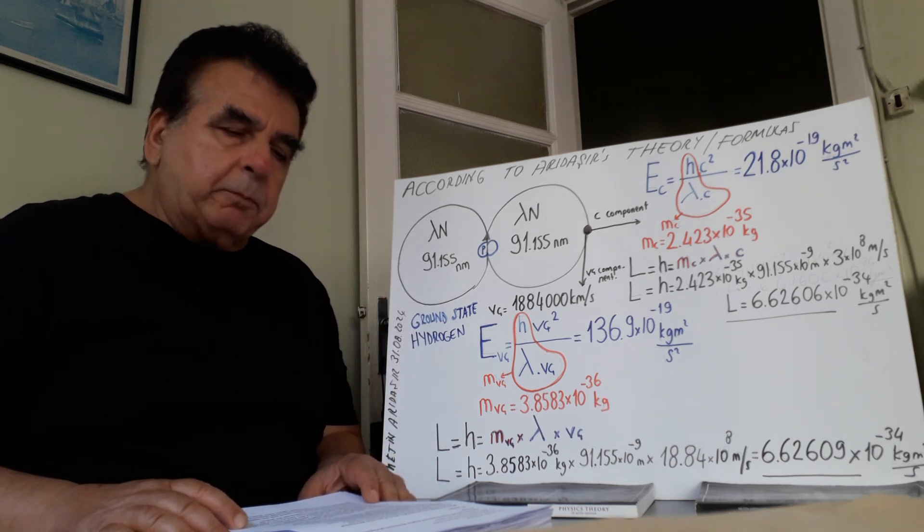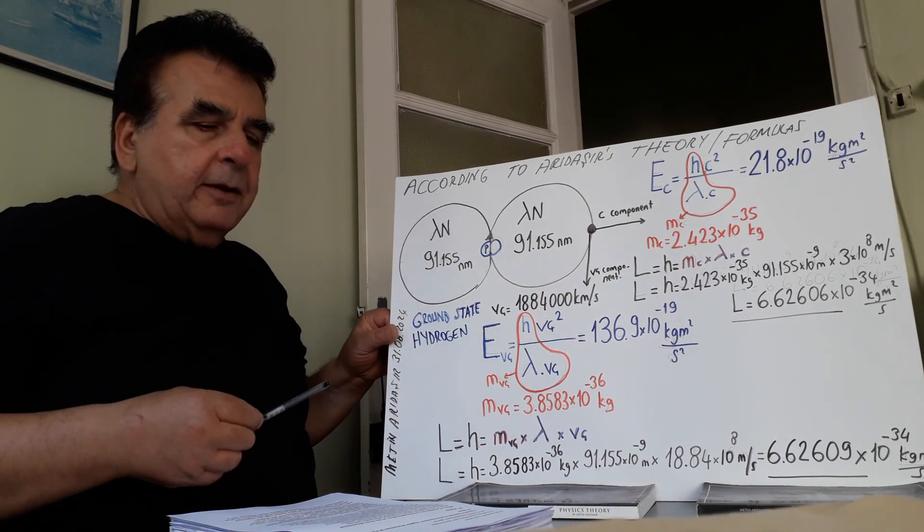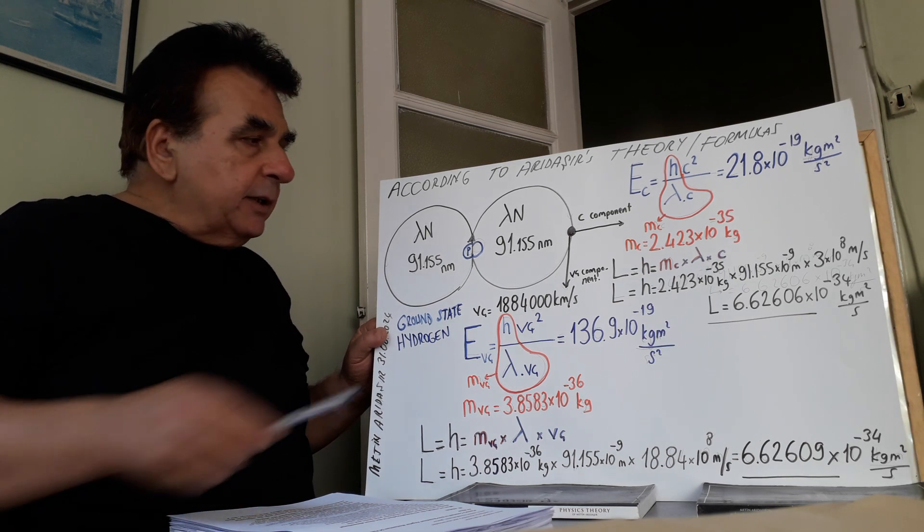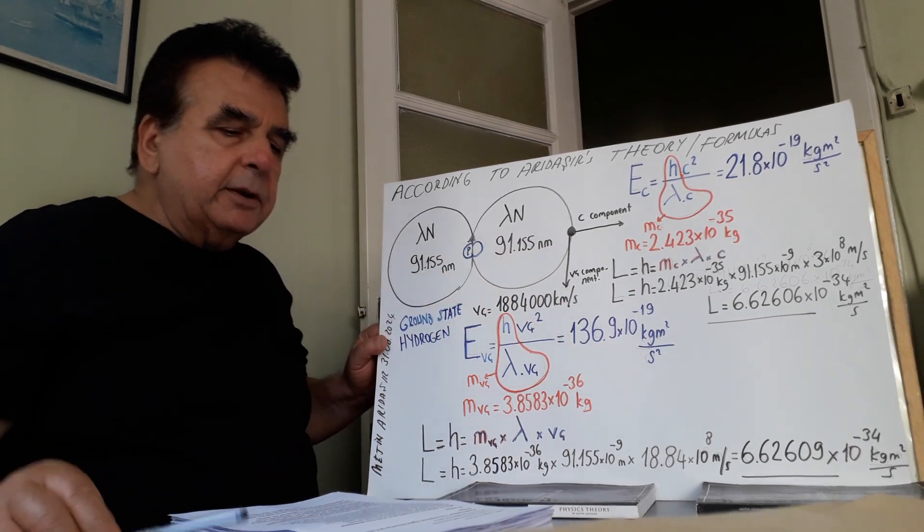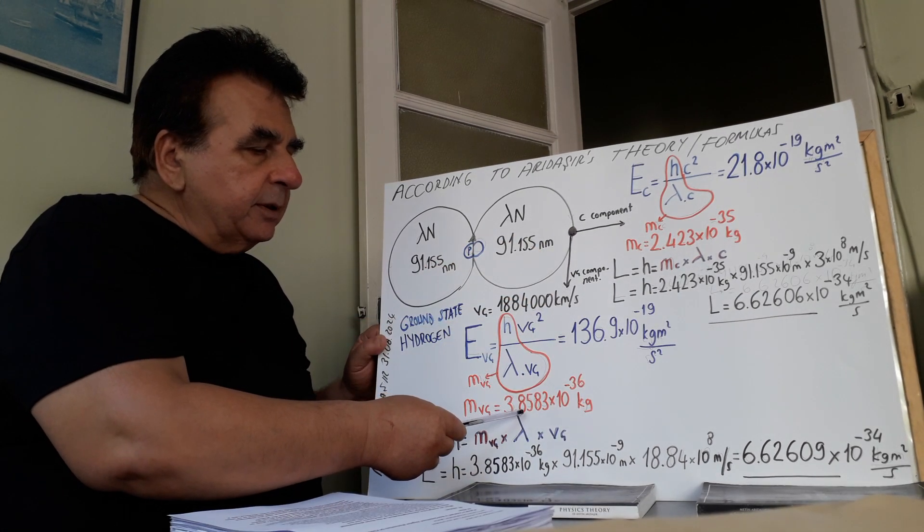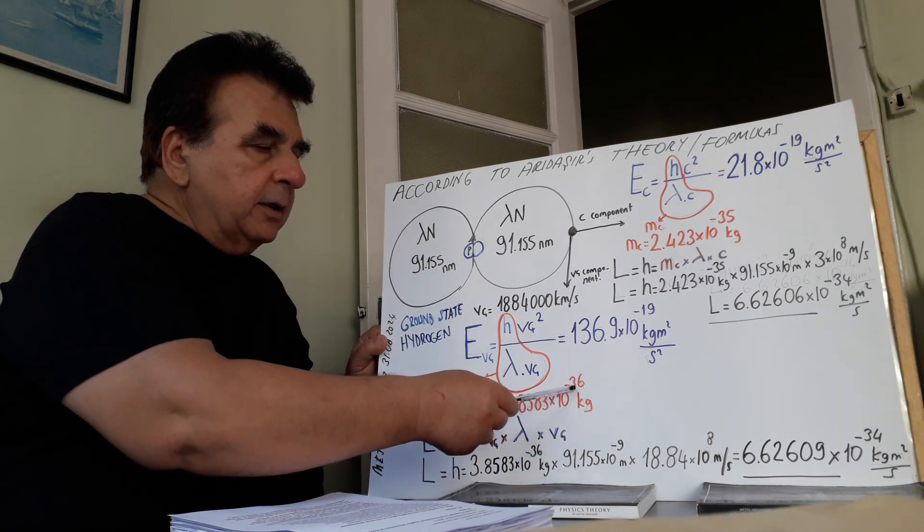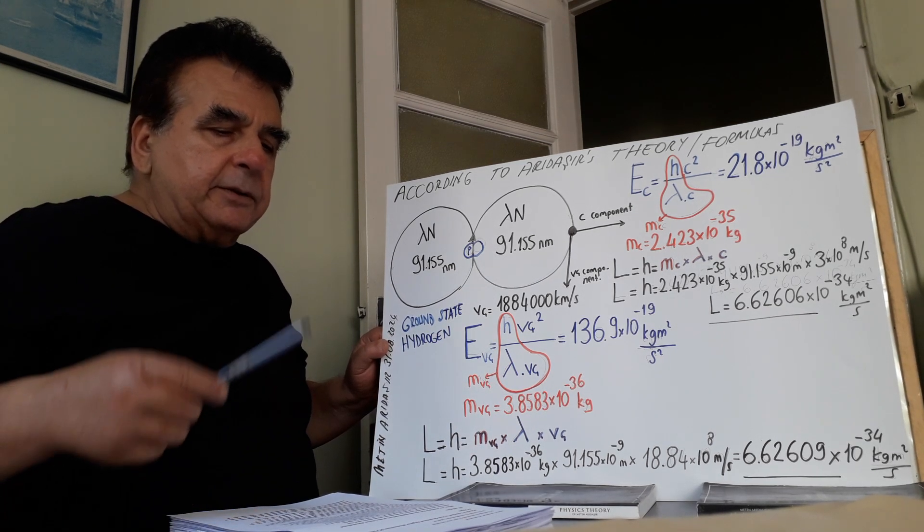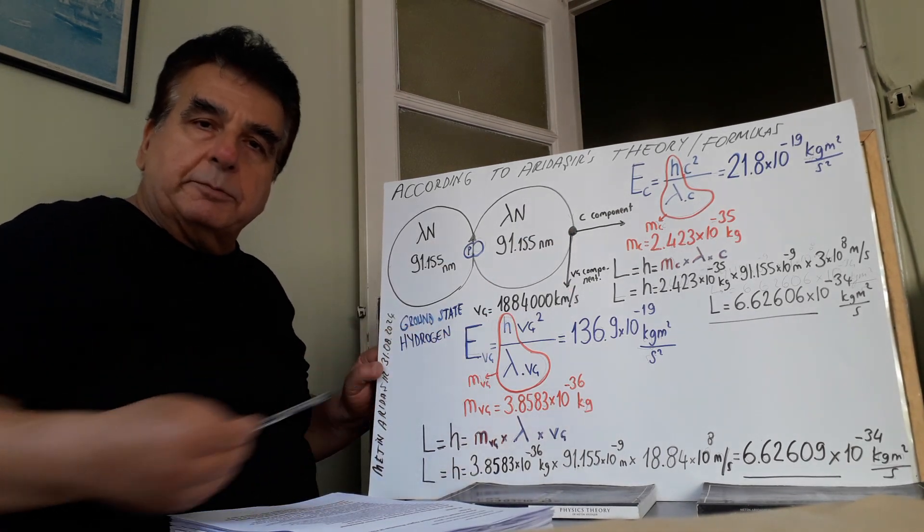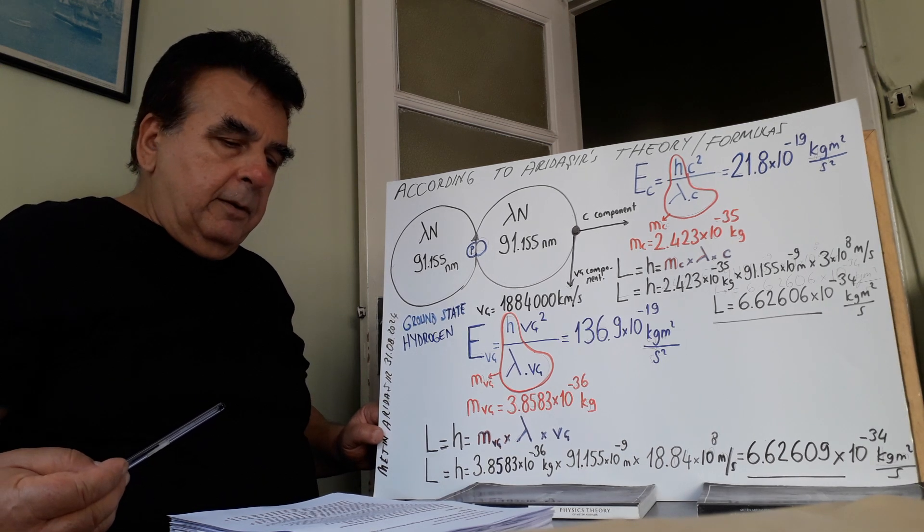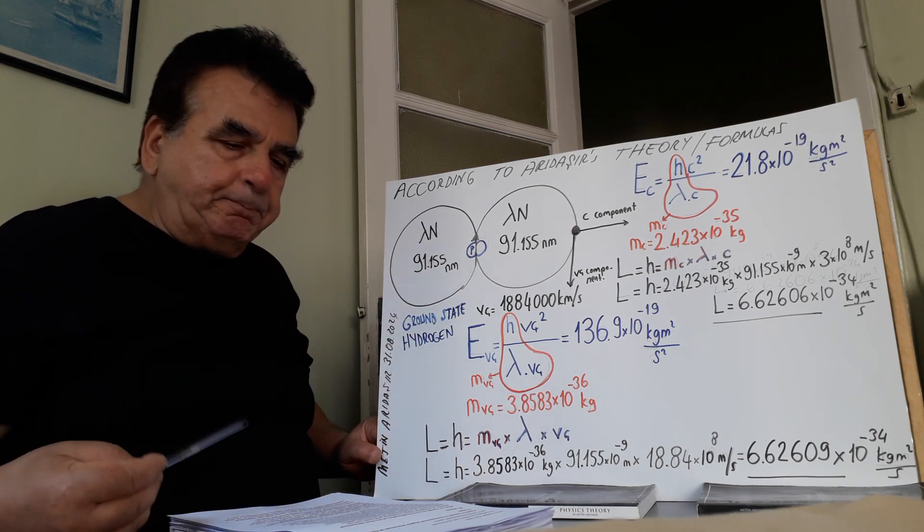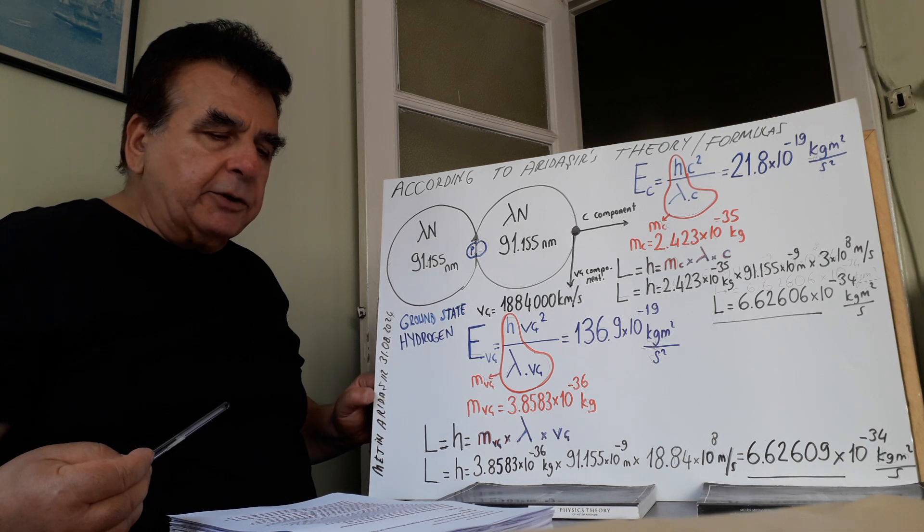When we multiply the wavelength radius of the three-dimensional electron, its tangential speed component, this is point, tangential speed component point mass, 3.85 times 10 to the minus 36 kilogram, and the tangential speed, 1,884,000 km per second, as I told you before. When we multiply three of them,